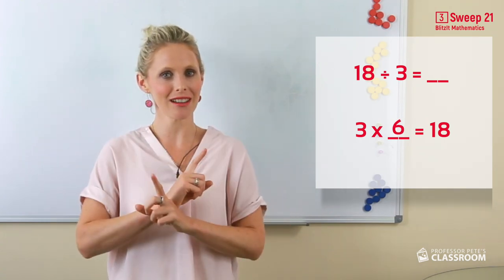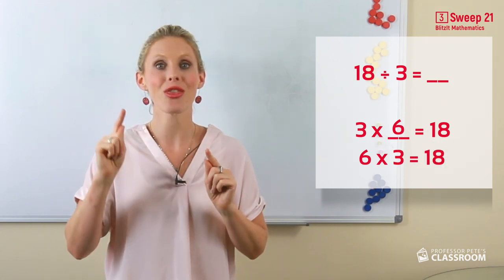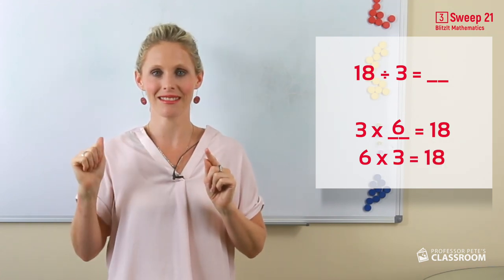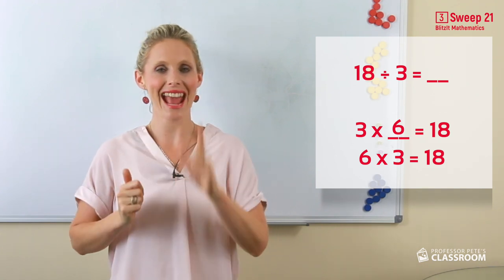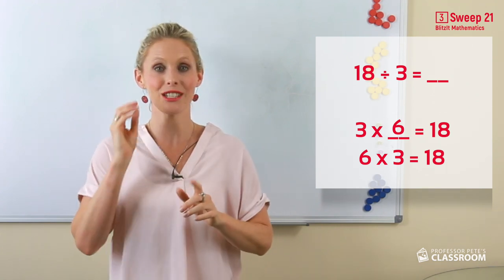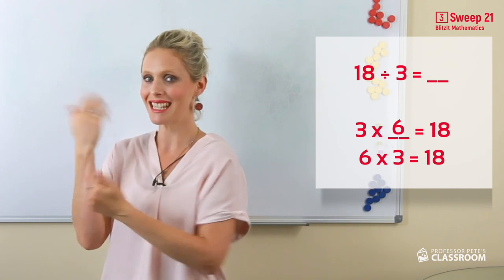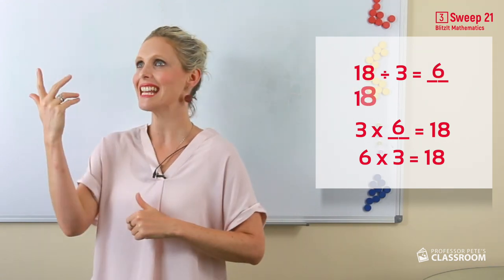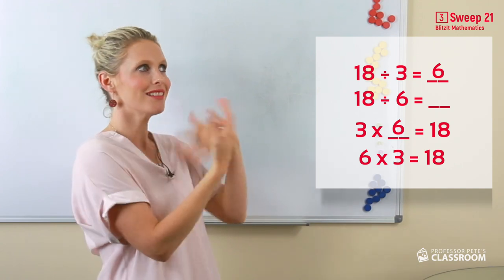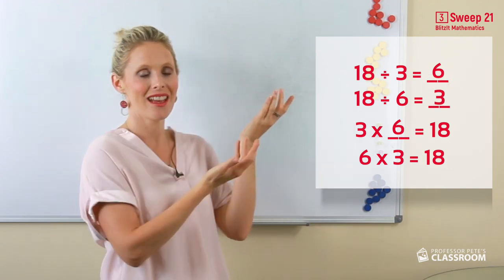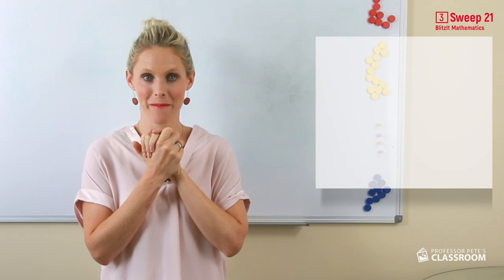And we know the turnaround: 6 multiplied by 3 equals 18. Let's look at the division. 18 divided by 3 equals 6, and 18 divided by 6 equals 3. That is the number fact family.